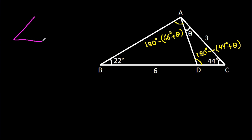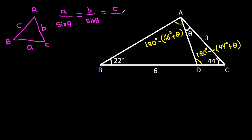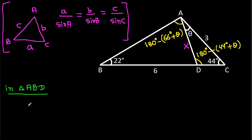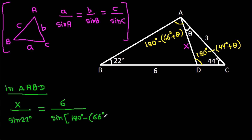Now, in any triangle ABC, if BC is a, AC is b, AB is c, then a over sin A equals b over sin B equals c over sin C. Suppose AD is x. Then in triangle ABD, x over sin 22 degrees will be equal to 6 over sin(180 degrees minus (66 degrees plus theta)).